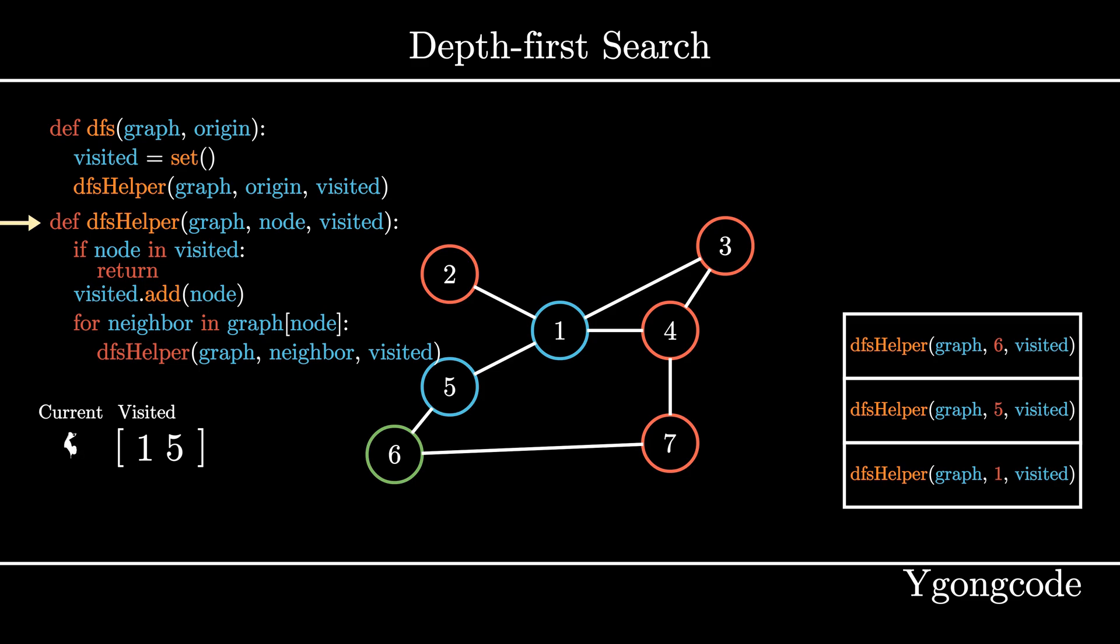At dfsHelper 6, since 6 hasn't been visited, we add it to our visited set and pick its neighbor, which happens to be 5. We call dfsHelper on node 5 and add it to the call stack.